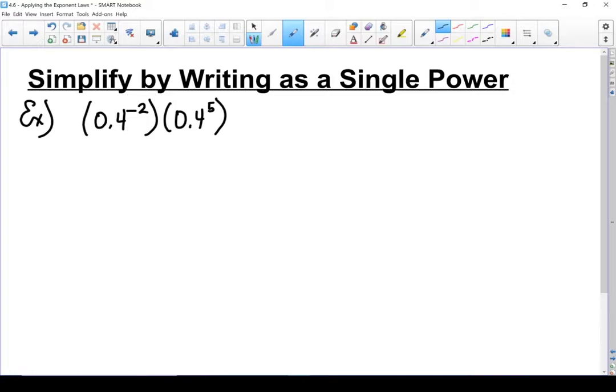Here I've got 0.4 to the negative 2 power and 0.4 to the power of 5. I'm going to show you two different ways to solve this expression. First, I've got the same base on both: 0.4 and 0.4. Don't worry about the fact that it's a decimal—this is the same base on both.